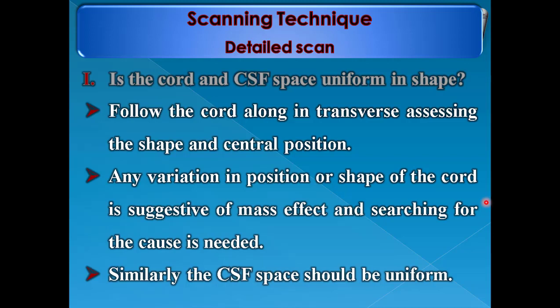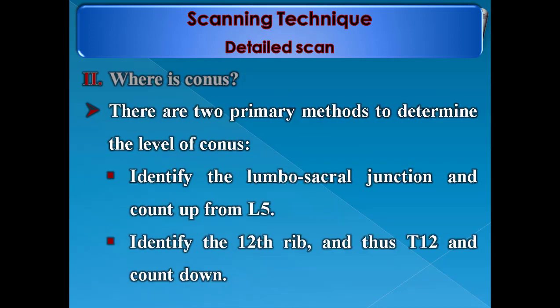Similarly, the CSF space should be uniform. The second question is: where is the conus? There are two primary methods to determine the level of the conus. The first is to identify the lumbosacral junction and count up from L5. The second is to identify the 12th rib and thus the T12 vertebra and count down.